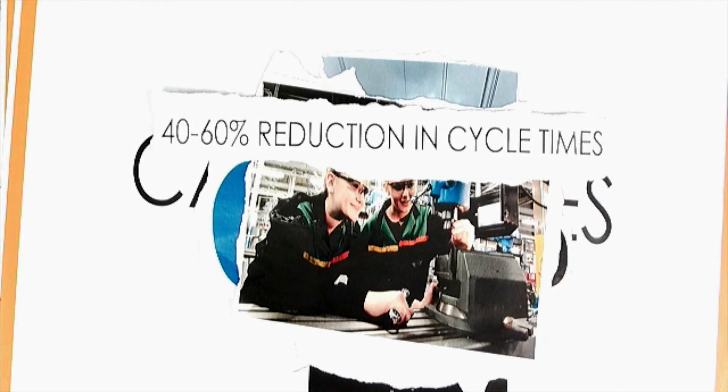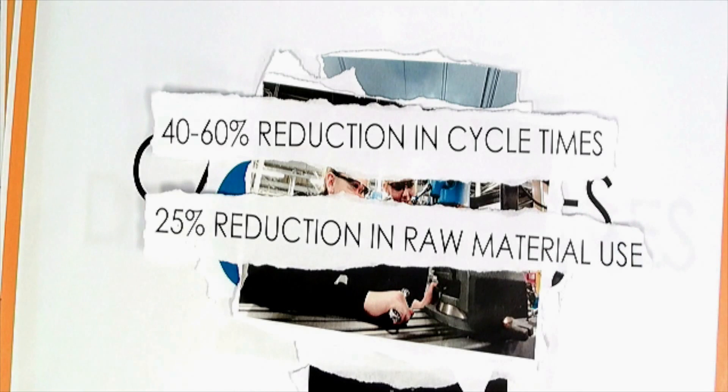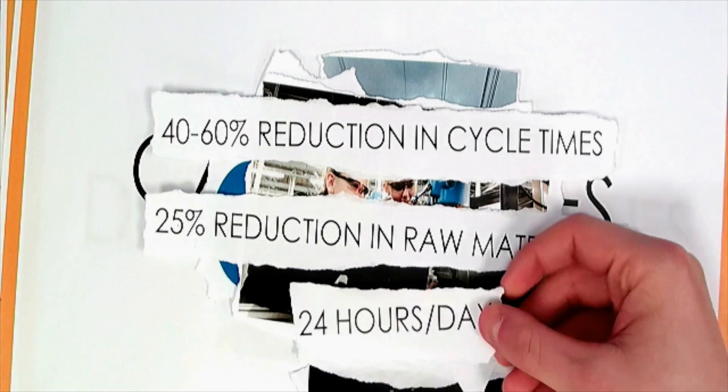This required a new flexible scheduling management system and the retraining of existing staff. These changes led to a 40-60% reduction in cycle times, a 25% reduction in the use of raw materials and faster setup. This combined with the ability to run the system 24 hours a day has increased productivity.